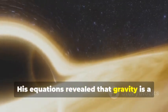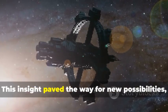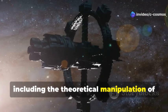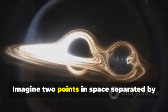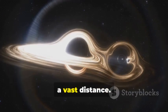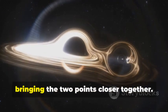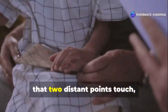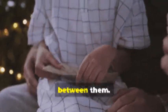Einstein's theory of general relativity provides the framework for understanding this relationship. His equations revealed that gravity is a curvature in space-time itself. This insight paved the way for theoretical manipulation of space-time for faster-than-light travel. Imagine two points in space separated by a vast distance. A warp drive would distort space-time, bringing the two points closer together, like folding a piece of paper.